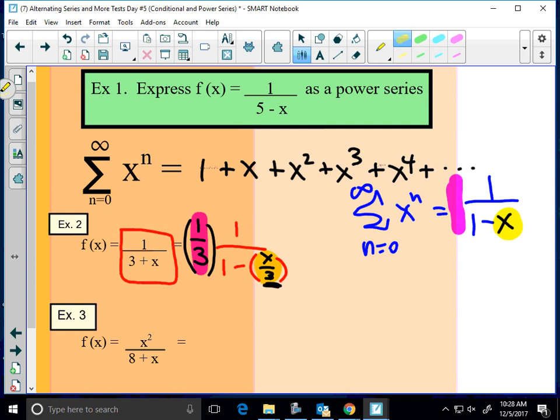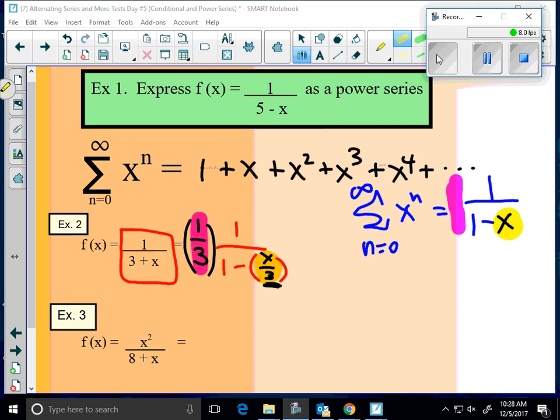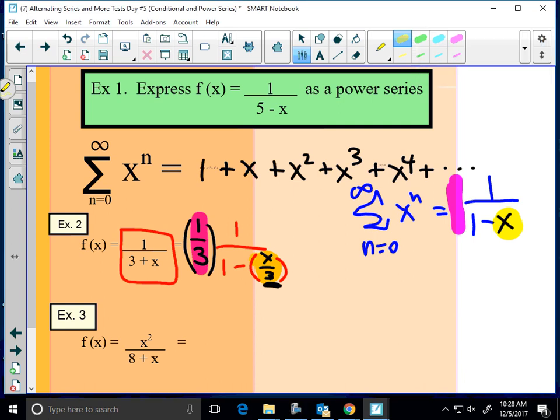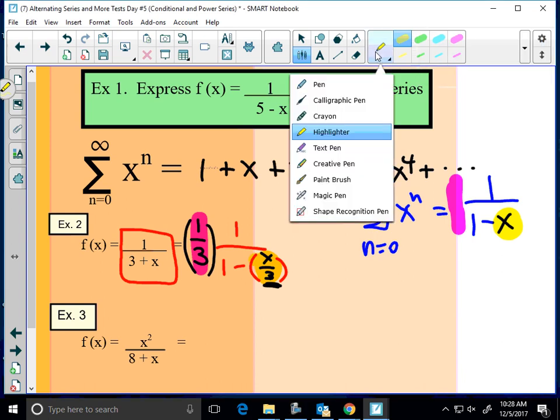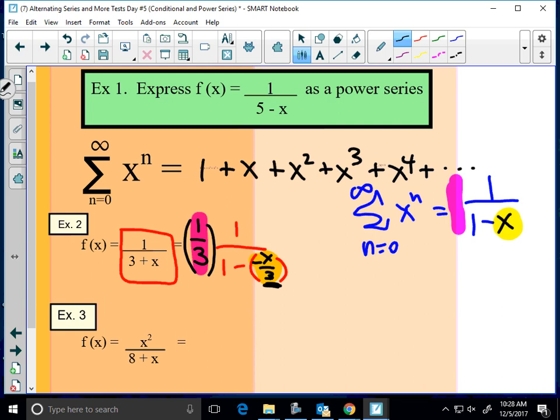So we can now write our power series based on that. Yeah, go ahead Wyatt. This happens from time to time as you know. I would have to put a minus here inside in order to suffice that this was plus before, right? So I have one over one minus a negative x over three.